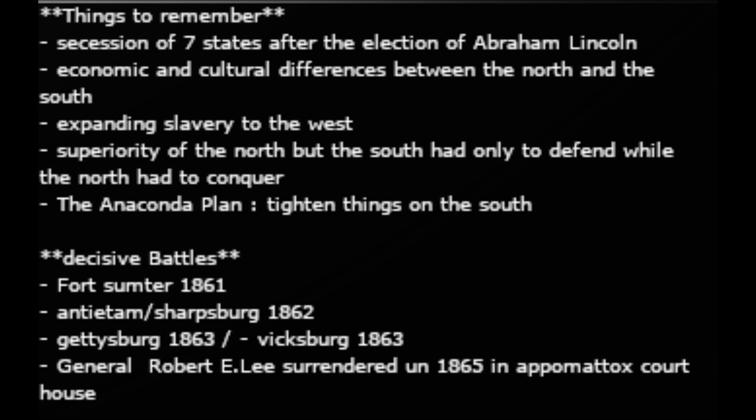The third battle was Gettysburg in 1863, where the South was defeated for the first time, and General Robert E. Lee was forced to retreat for the first time. Then came the Battle of Vicksburg in 1863, where the Confederates lost control of the Mississippi River — the Anaconda Plan was working. Finally, General Lee surrendered to General Grant in 1865 at Appomattox Courthouse. Robert E. Lee was the Confederate general; Ulysses S. Grant and William T. Sherman were Union generals.